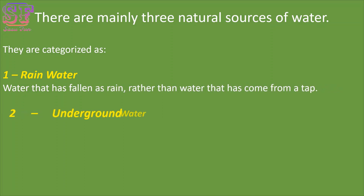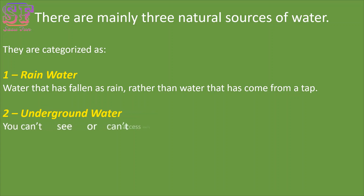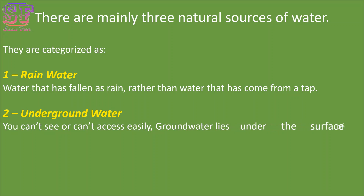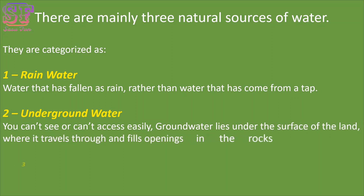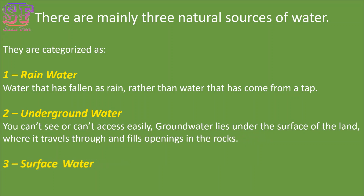Underground water — you can't see or access it easily. Groundwater lies under the surface of the land, where it travels through and fills openings in the rocks. Third, surface water, which is easy to see and use.